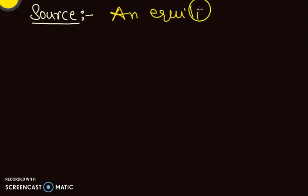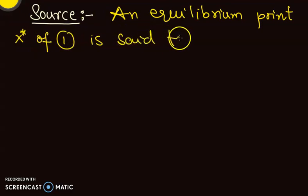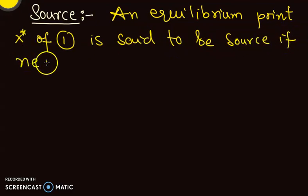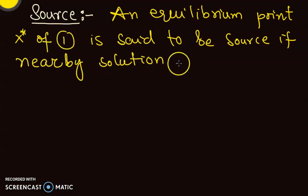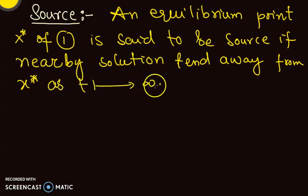Then we define something called a source. An equilibrium point x-star of equation 1 is said to be a source if nearby solutions tend to move away from x-star as t goes to infinity.